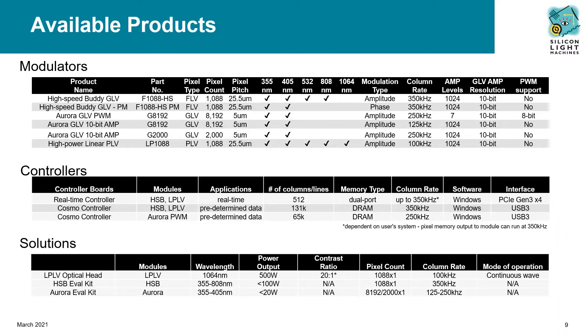We are very pleased to announce the beginning of our high-power linear PLV product line, the LP1088. This device enables high-speed, high-powered linear amplitude modulation for wavelengths from UV to NIR.